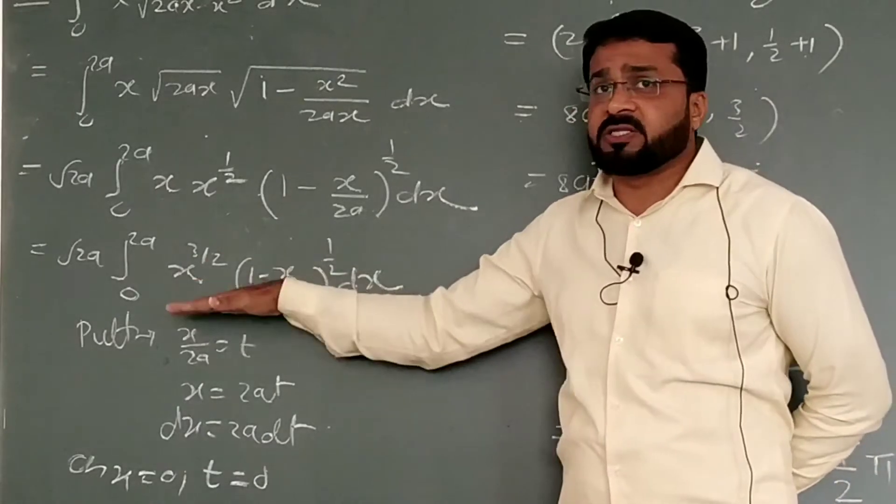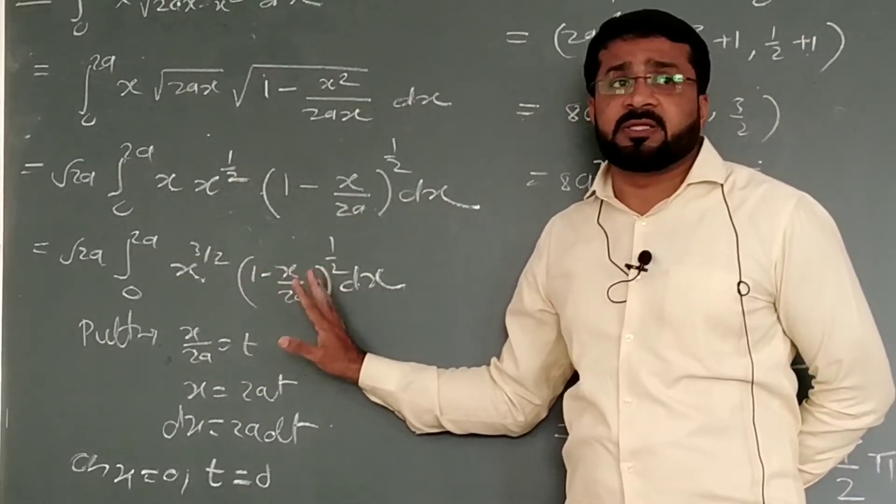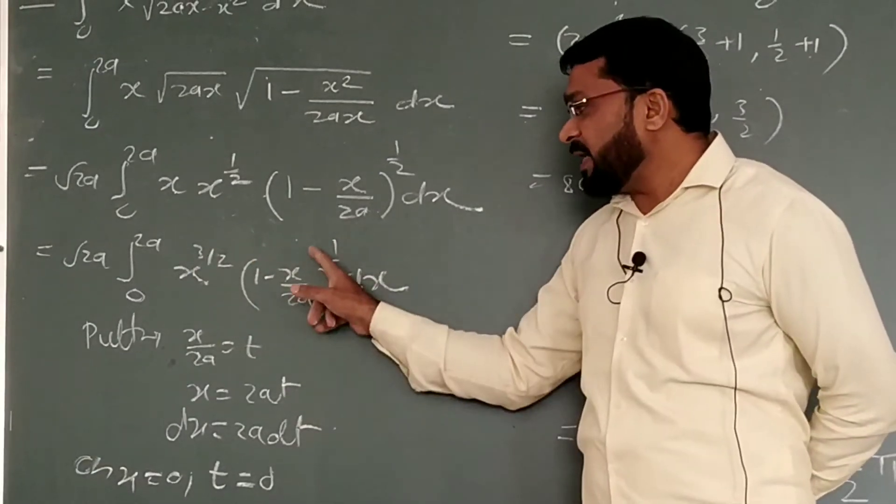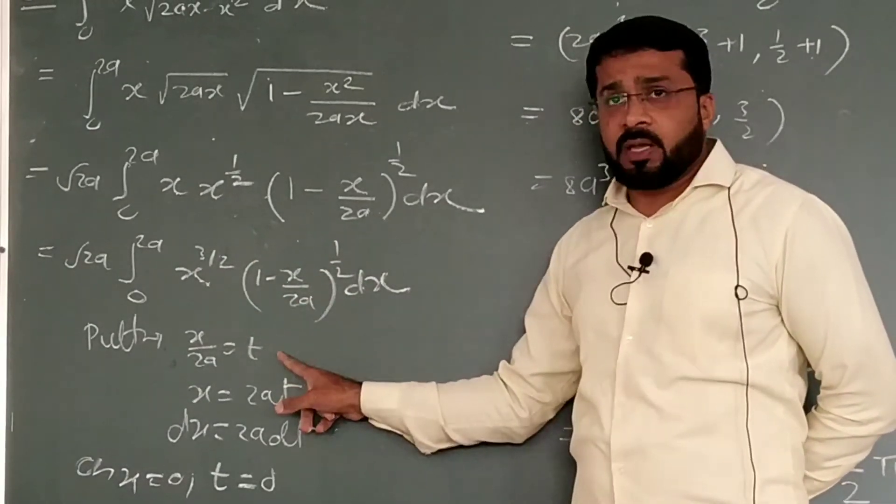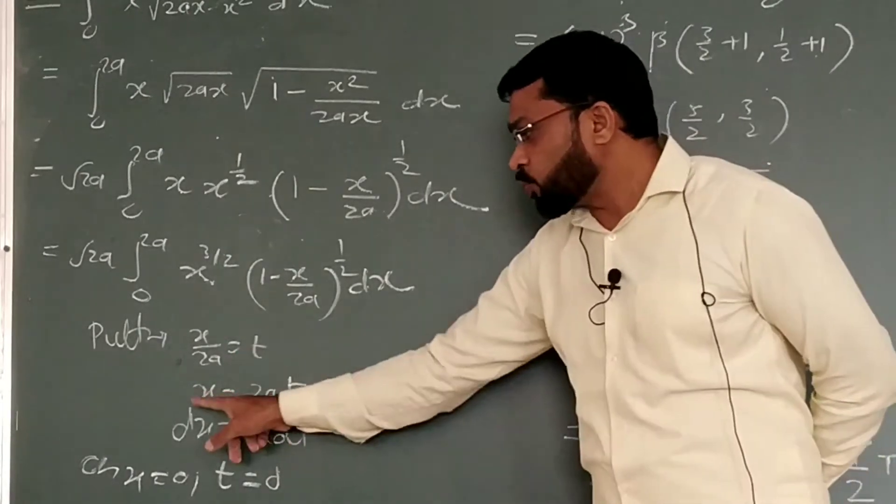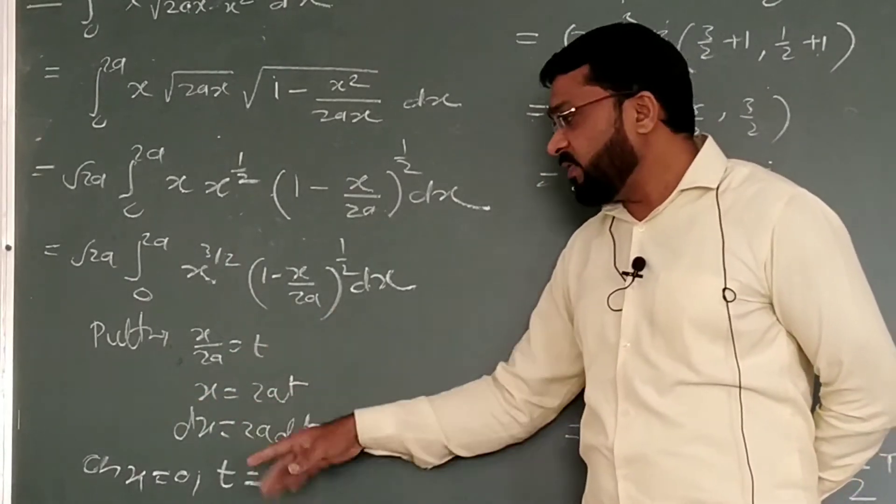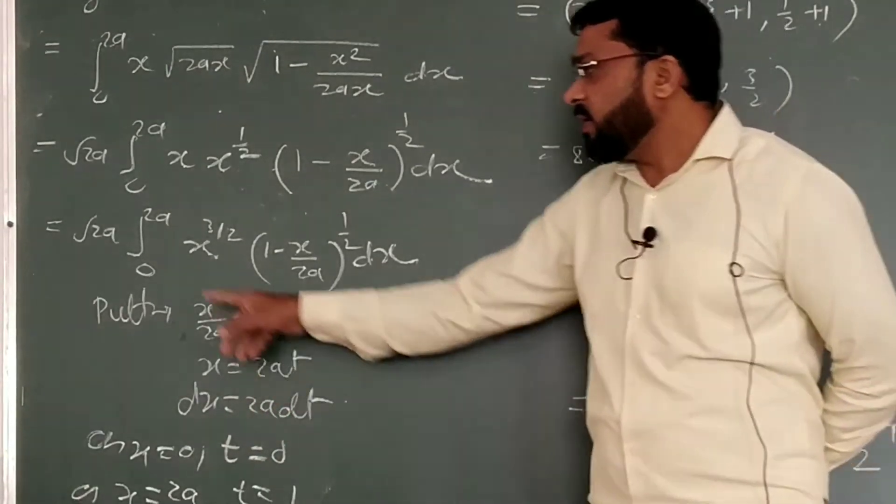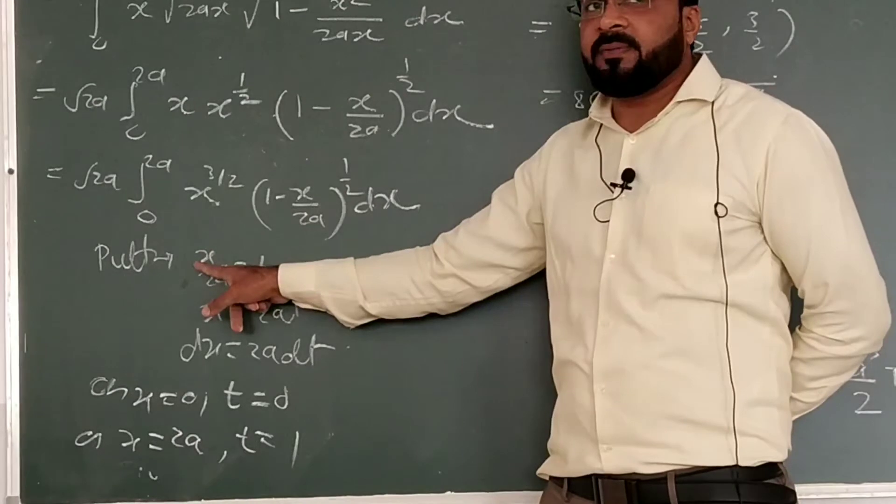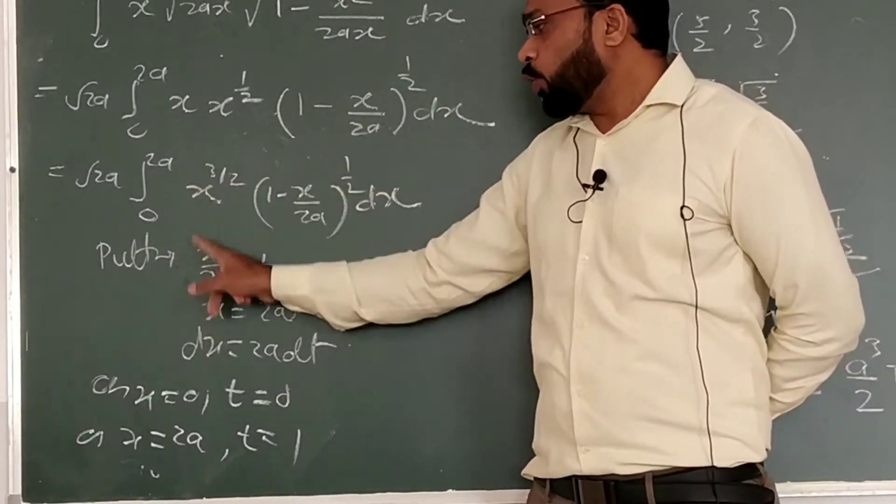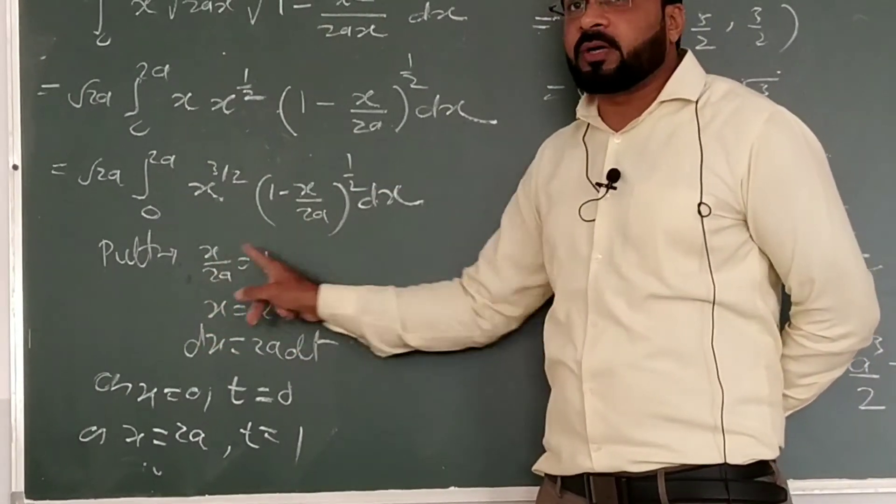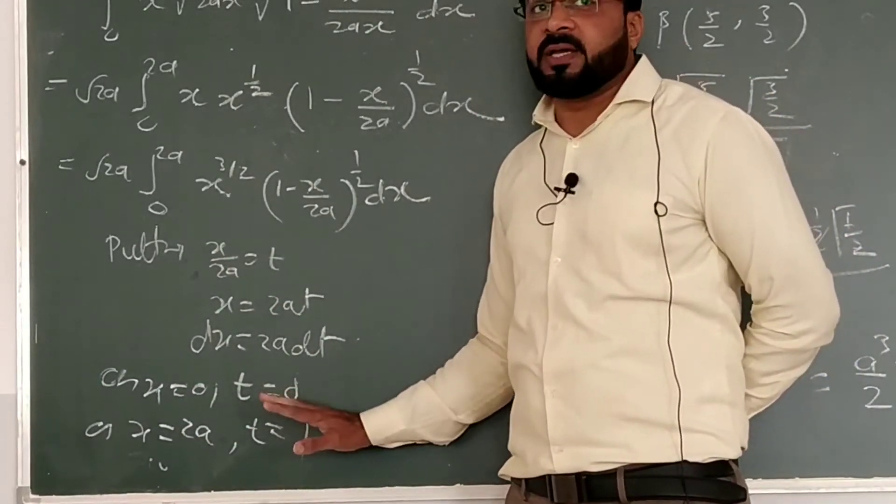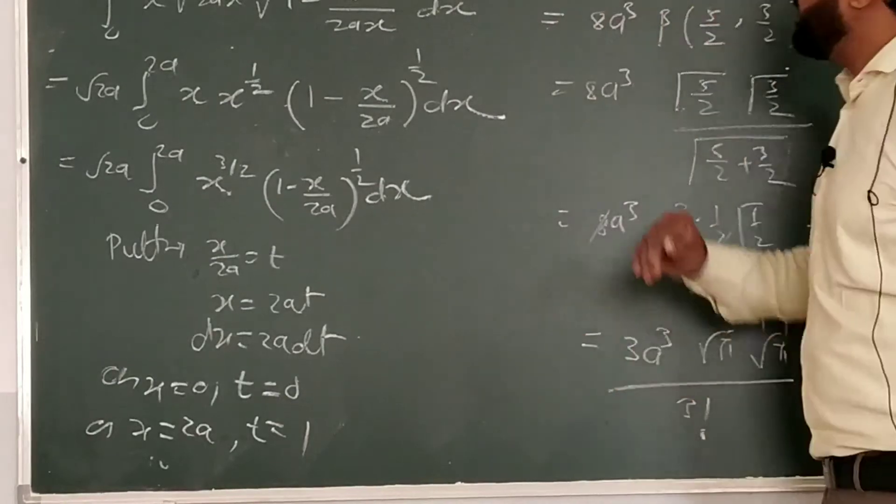We need beta function definition accordingly, 1 minus some single variable. 1 minus x or 1 minus t. So what will we do now? x by 2a we will put as t, and substitution we take here. So x equals 2at. Take a derivative, dx is equal to 2a dt. Now, what about the limit? When x is 0, t is 0. But when x is 2a, 2a by 2a, then t will be 1. So here limit is 0 to 1, which we need for the definition of beta function.